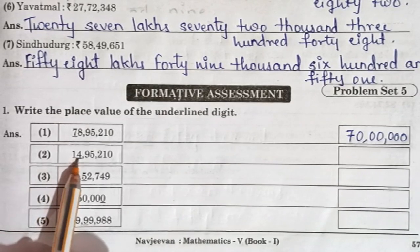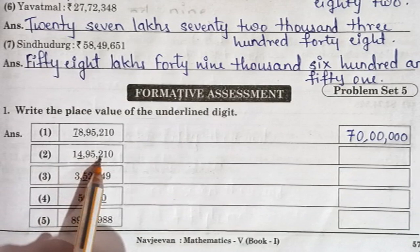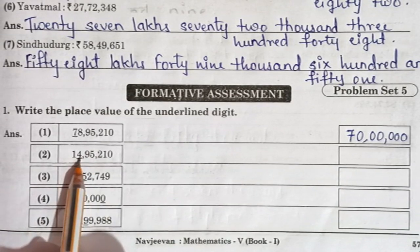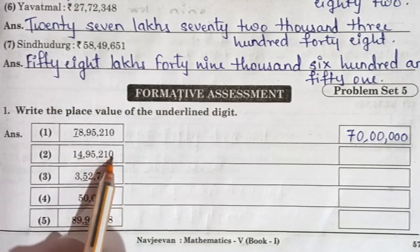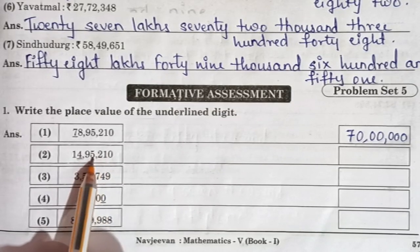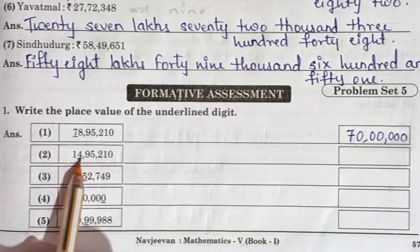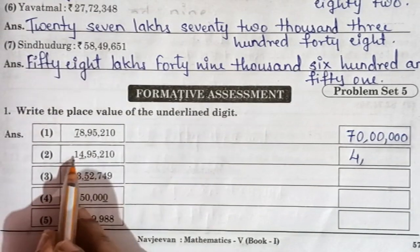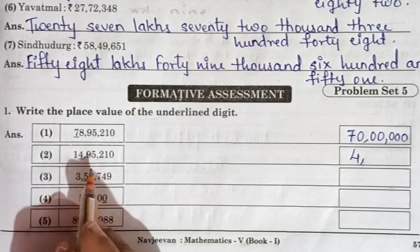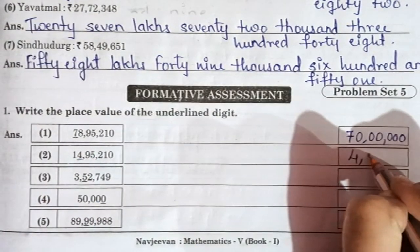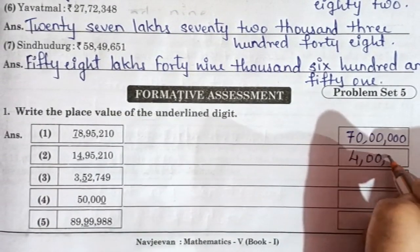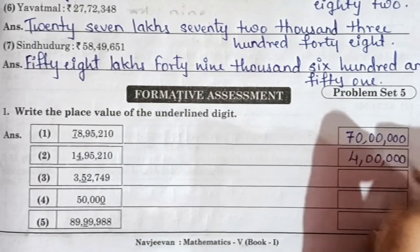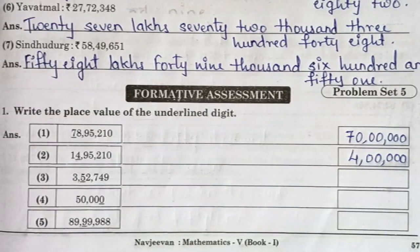Second number is 14,95,210 and the digit 4 is underlined. Let us find where 4 is: units, tens, hundreds, thousands, ten-thousands, lakhs — so 4 is at lakhs place. We write 4, then zeros for ten-thousands, thousands, hundreds, tens, and units. So the place value is 4,00,000. Clear — that is how you write the place value.